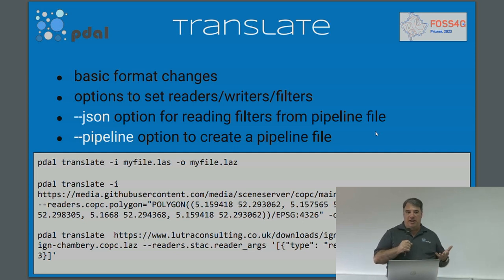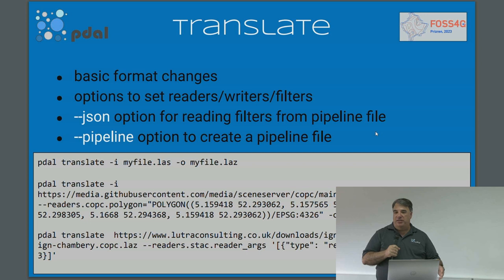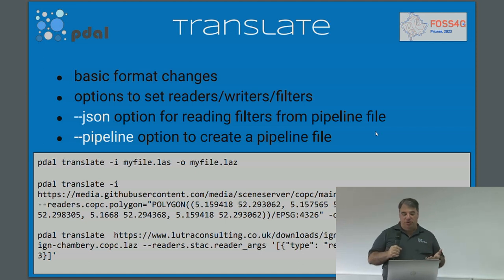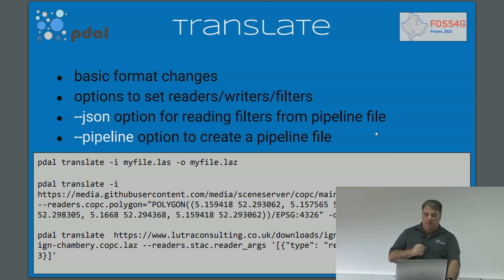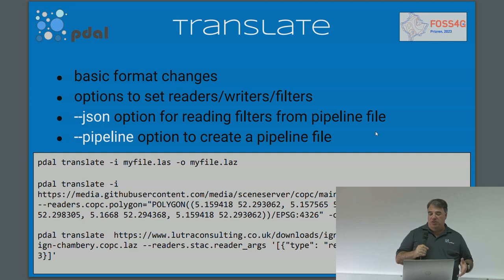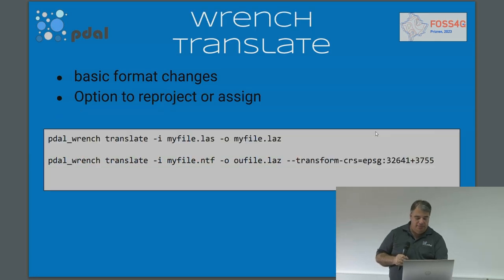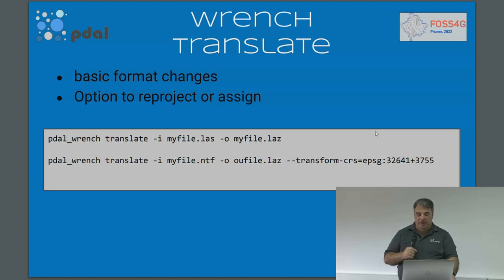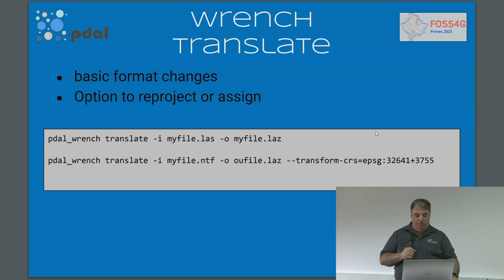Translate is — if you've used GDAL or OGR, you know it's one of the main things you'll be using all the time. It's the basic option to translate data from one format to another. But essentially since everything is a pipeline, you can do more than that with the translate command — it's essentially a mini pipeline operation. In one example, I'm translating a dataset from a website but specifying a polygon that it clips to. In another, I'm specifying stack reader args to only read the COPC data to a resolution of three meters so I don't have to read as much data. With Wrench, you can do the same kind of translation operations or translate projections at the same time, but your options are more limited — it's a higher-level command that works in parallel.